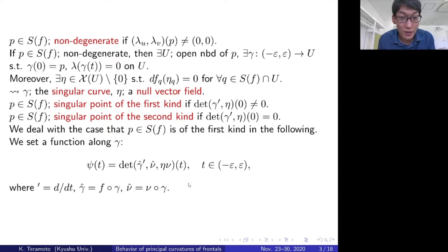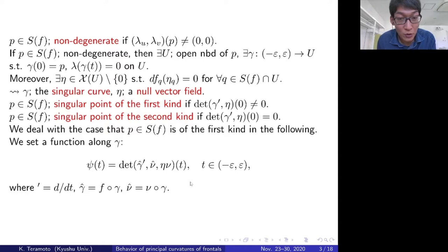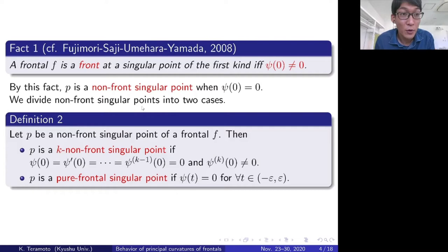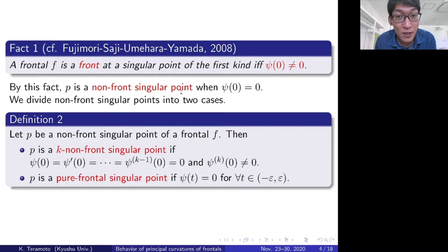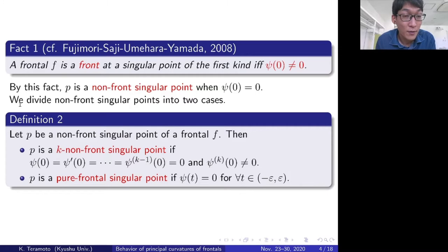Then, we set a function ψ along γ by this form, where γ̂ is the composite map of f and γ, and ν̂ is the composite map of ν and γ, and η_ν is the directional derivative of ν in the direction η. The following fact is known: a frontal is a front at a singular point of the first kind if and only if ψ(0) does not vanish. So, P is a non-front singular point — that is, a frontal singular point but not a front singular point — when ψ(0) vanishes.